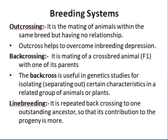Line breeding is another method — it involves repeated backcrossing to one outstanding ancestor, so that the ancestor's contribution to the progeny increases. We continuously cross and backcross offspring to that outstanding ancestor, using its semen. For example, if an animal has won a fair, produced a lot of milk, or won a beauty competition, people try to breed that bull with their cows. This is line breeding.